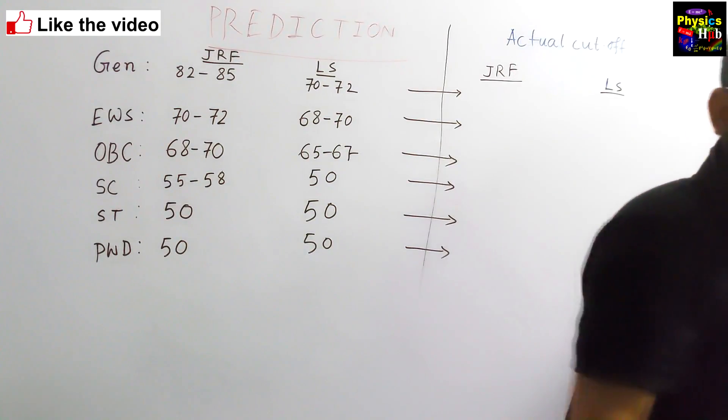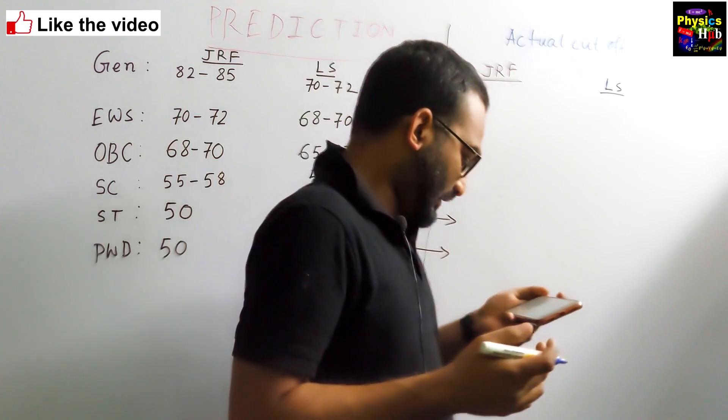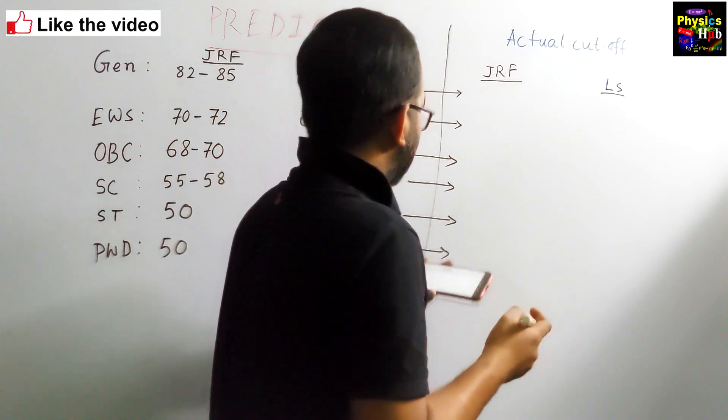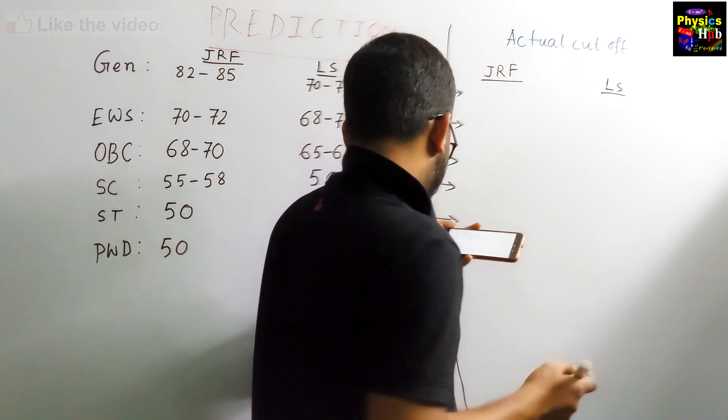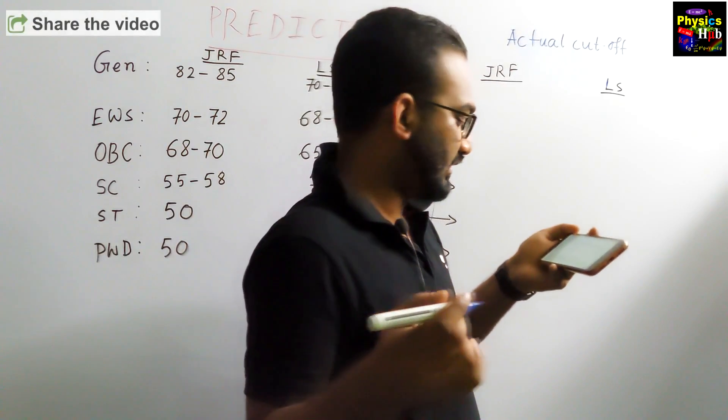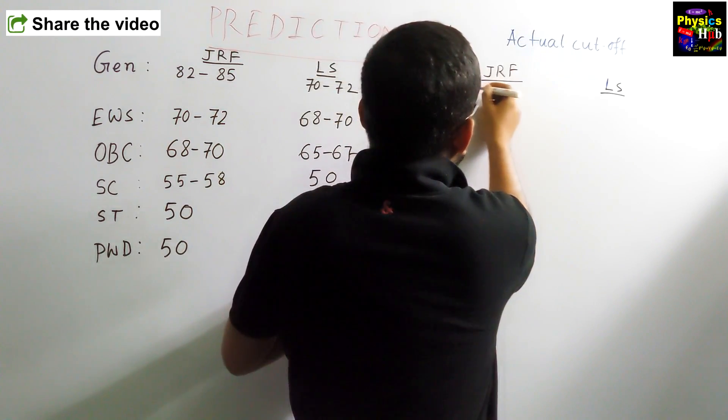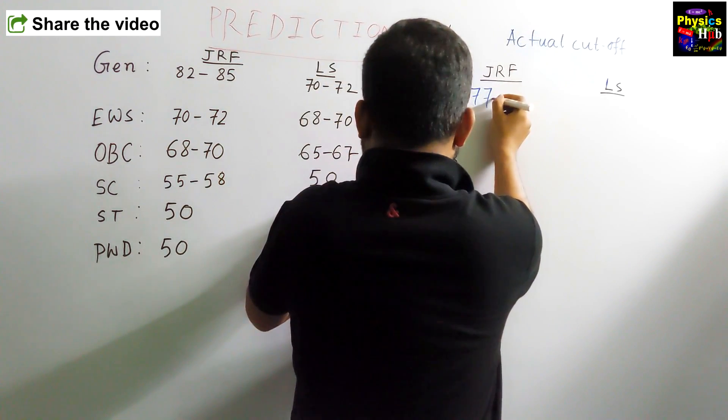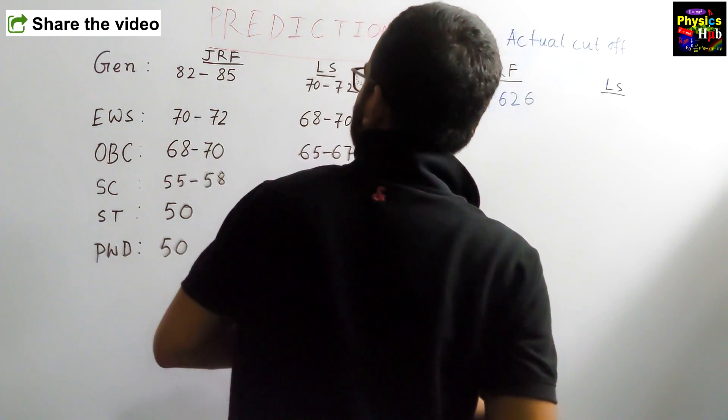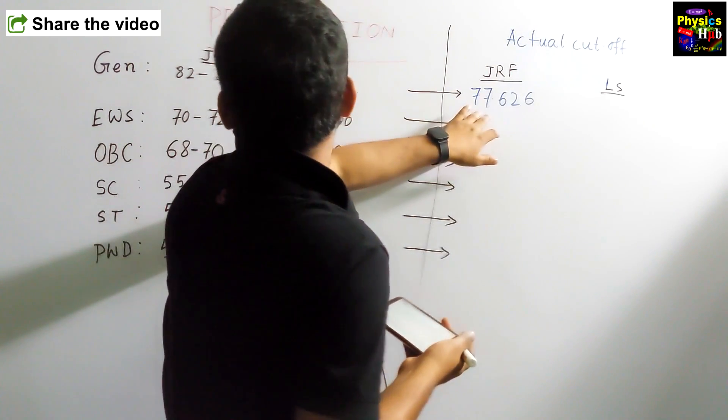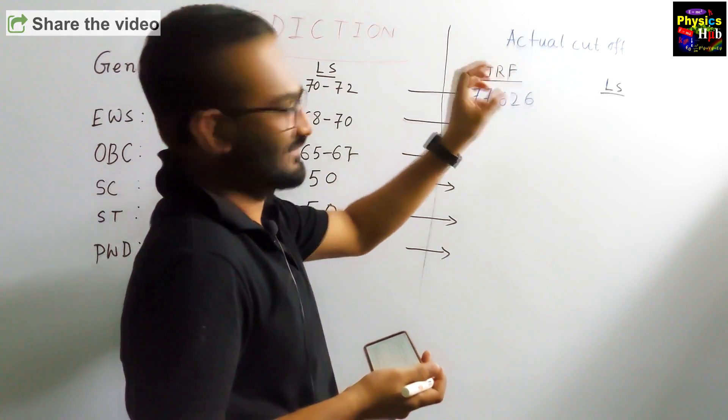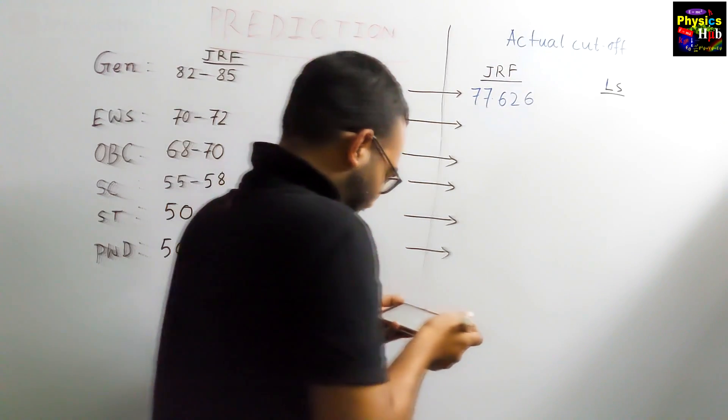Now let us look at the actual cutoff which has been released by CSIR. So you can see for Physical Science category, for JRF general cutoff is 38.813 percent. So it will be 77.626. We predicted 82, so it is less, not more than our prediction. That is good.